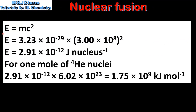So next we will go through the calculation. To calculate the energy released, the mass difference between the reactants and the products is multiplied by the speed of light squared. This gives us a value of 2.91 times 10 to the negative 12 joules per nucleus.